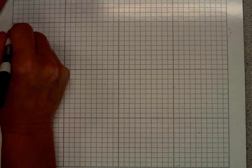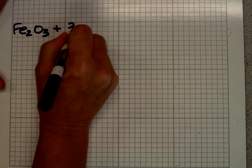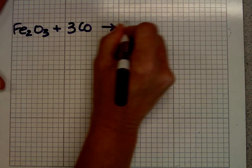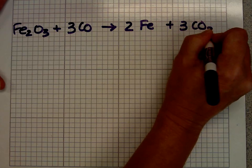Here's the equation we're going to be using today. Fe2O3 plus 3CO reactive form 2Fe plus 3CO2.